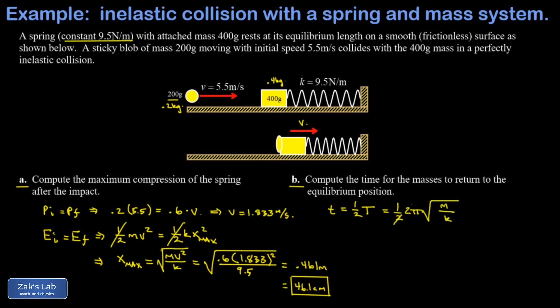And the twos cancel there, and I get π times the square root of m over k. Again, the oscillating mass is the entire 600 grams or 0.6 kilograms, and k was 9.5 newtons per meter. Into three sig figs, I get 0.790 seconds, and we're done.